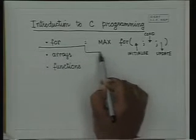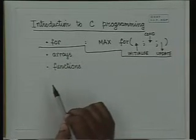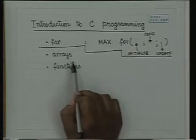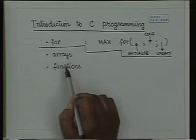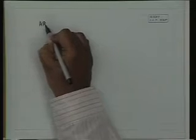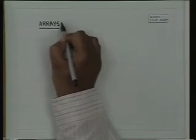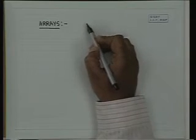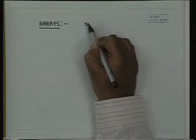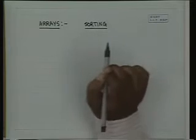After having done the loop construct, we will see how to use arrays. Arrays are vital for any programming — whenever you need to read in a block of data and use it, you require arrays. One of the classical examples of using arrays is sorting. We will take up a simple exchange sort and see how arrays are used.